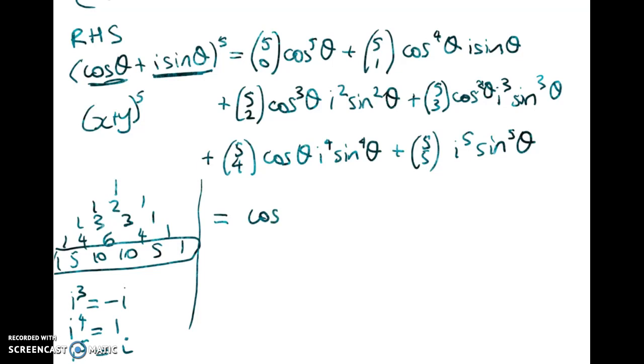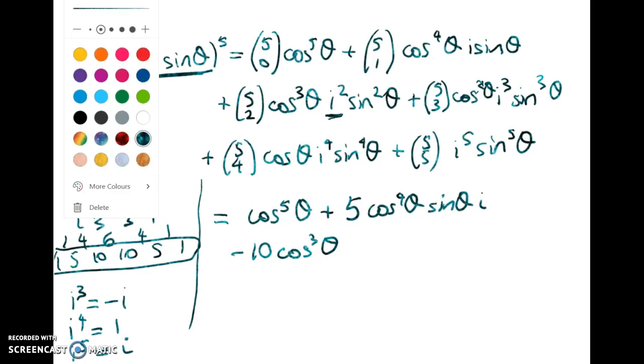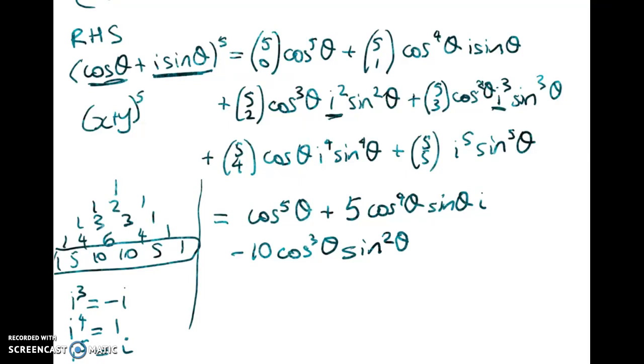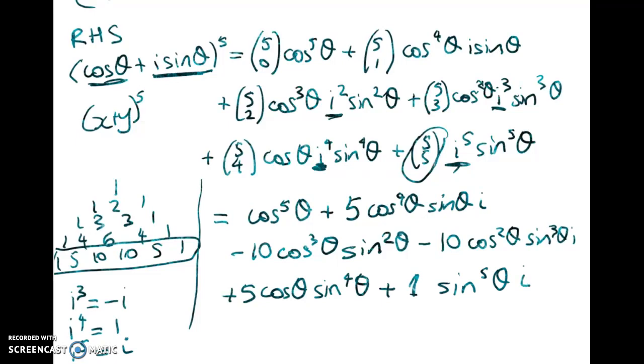So in here we get pretty quickly to this: cos to the power of five plus five, I'm going to stick the i at the end this time, plus ten cos cubed theta. Now that i squared is negative one, so I don't actually want plus, I want minus ten, right, because that's negative one. And in here the i cubed is minus i, so we get minus ten cos squared theta sine cubed theta i. Here the i to the power of four is equal to one, so we've got plus five cos theta sine to the power of four theta. Plus one here, and then this is i, so we've got sine to the power of five theta times i. And I don't need that one, that can go away. Right, so we're just about there. That's the expansion that we've done.